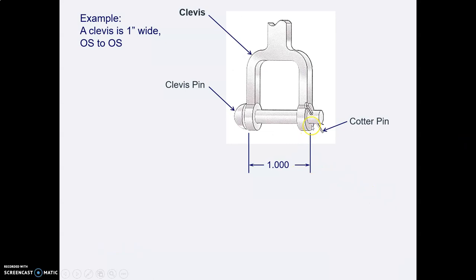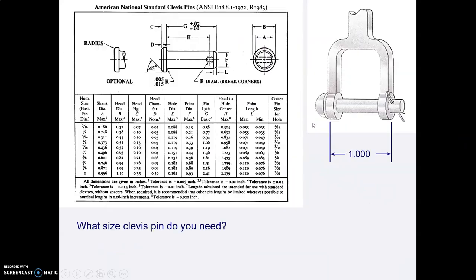Let's say we have a clevis where outside to outside we want it to be one inch. So first let's figure out what size clevis pin we need. Well looking at the picture we need that hole for the cotter pin to be outside of the one inch clevis don't we. So this distance h from the underside of the pin to the hole has to be more than one inch or we won't be able to get our cotter pin through the little hole. So let's look and see which one of these pins has an h distance greater than one inch and we see aha there's an h distance bigger than one inch looks like it's a 7/16 inch clevis pin.